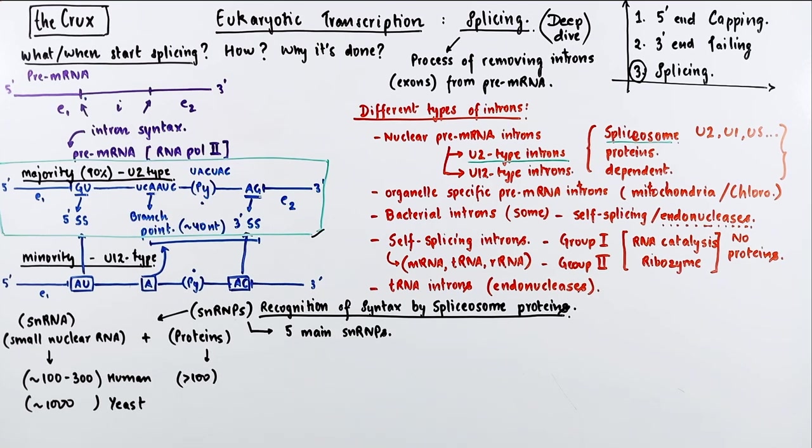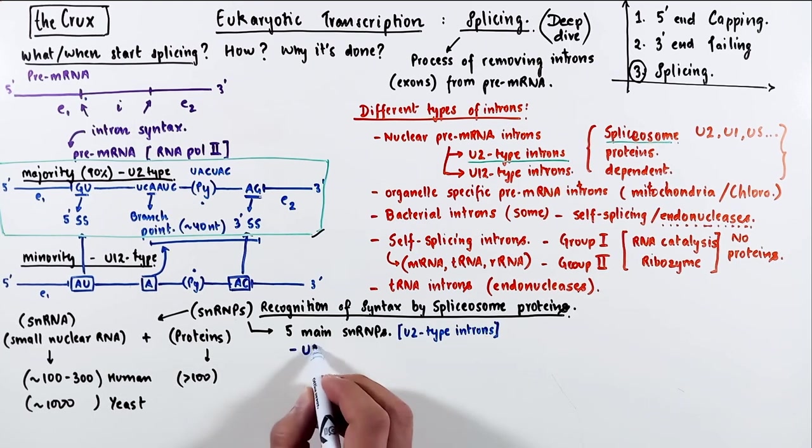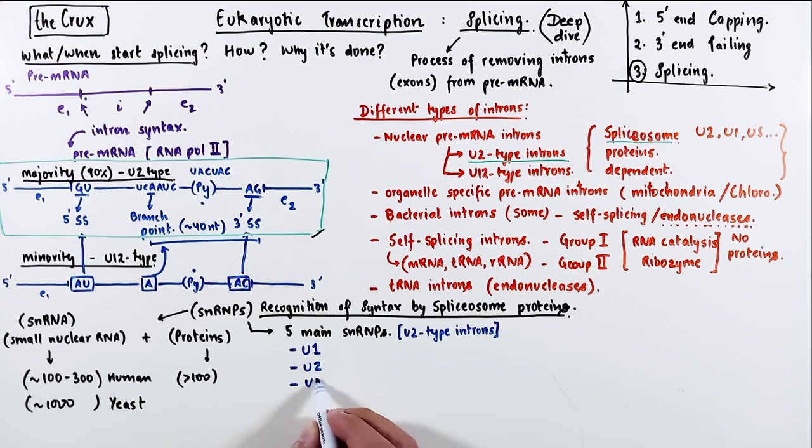Now, there are five major snRNPs that are involved in the processing of the U2-type introns. They are simply named U1, U2, U5, 4, and 6.